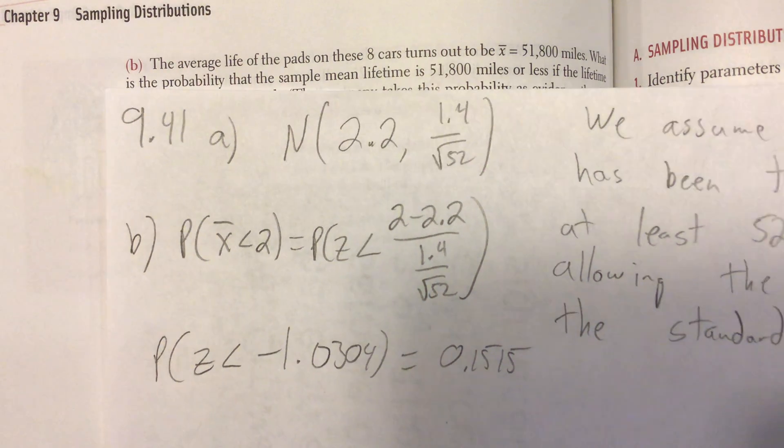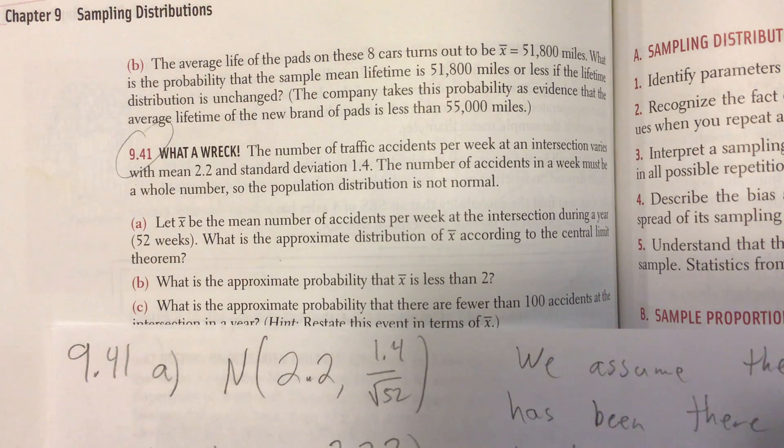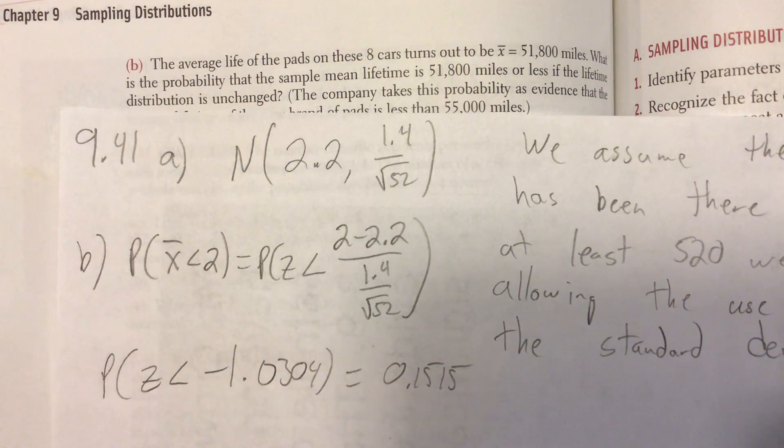And again, AP test, please write that answer in a complete sentence, right? The approximate probability that X bar is less than 2 is 0.1515.